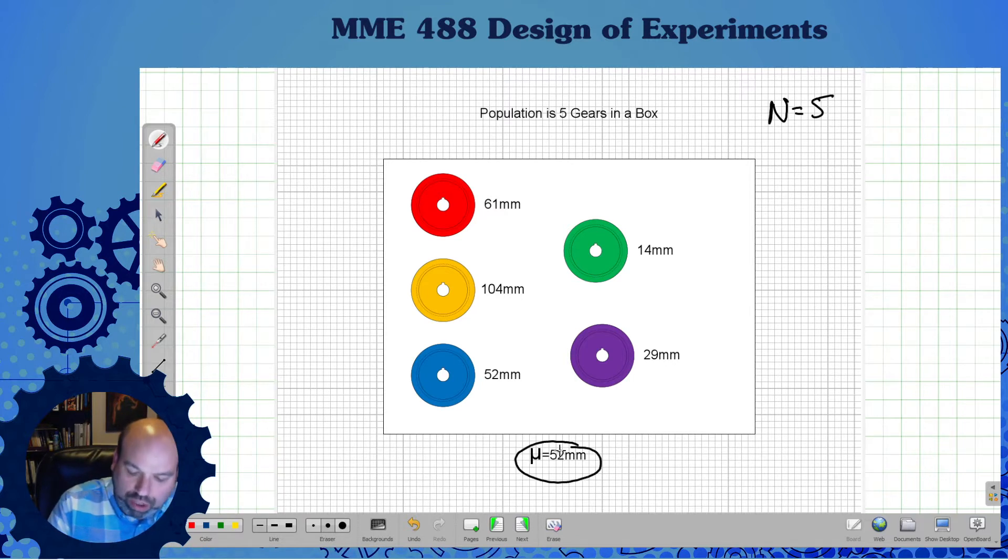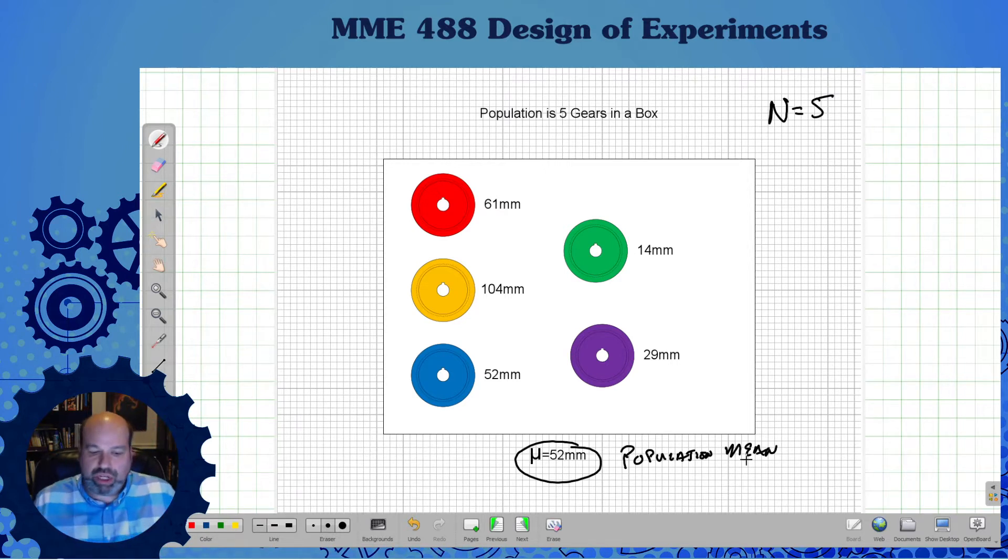There's a known population mean. We have these five special gears. These are the only gears in the world. They have different diameters. There's a known for sure population mean for this.